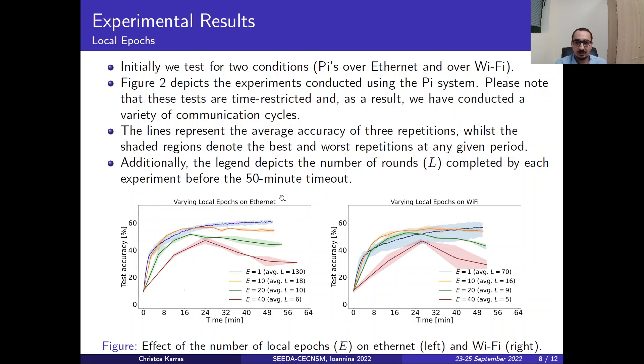And as a result, we have conducted a variety of communication cycles. The lines here represent the average accuracy of three repetitions, while the shaded regions in the figures denote the best and the worst repetitions at any given period.